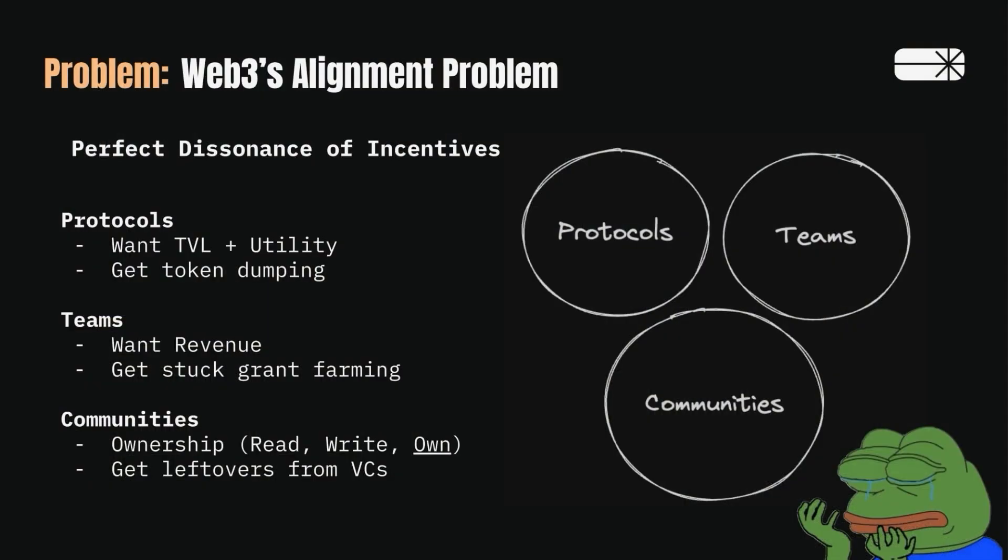So what is the alignment problem? If you really boil it down, you could say there are three overarching stakeholders in a grant context. There's the protocols — they're the ones with the native token. What do they want? They want TVL, they want utility. And when they're doing direct grants, what they get is token dumping. Because the team, as soon as they get these tokens, they have to sell them — they have to pay bills and pay people. So protocols want TVL, they want utility, they get token dumping. The bigger the program, the bigger the dump.